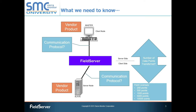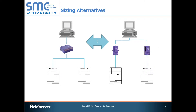When calculating the number of data points to be transferred, please keep in mind that we only need to know if the number of data points exceeds certain thresholds that guide us to choose different hardware or point licenses. Those thresholds per field server occur at 250 points, 500 points, 1,000 points, 5,000 points, and 10,000 points. You will also need to consider whether the data points are being split between multiple field servers for practical or performance reasons.